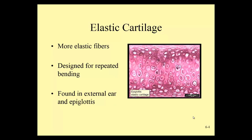Elastic cartilage is another type of cartilage. It's very flexible — more flexible than hyaline cartilage. We find it in the ear and the epiglottis, which is a flexible cartilage that covers the opening to the airways and covers the larynx when we swallow to prevent food from entering our airways.